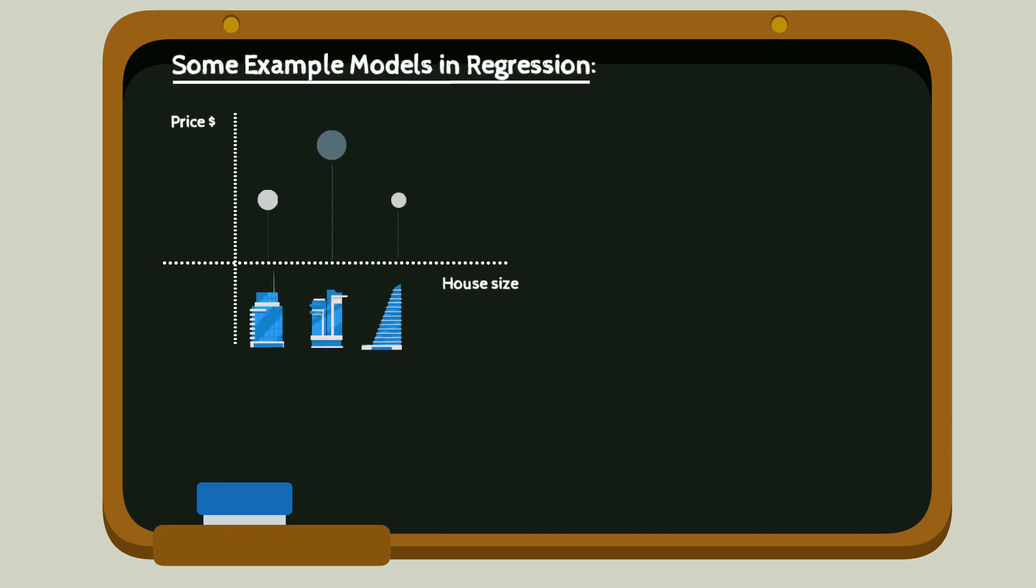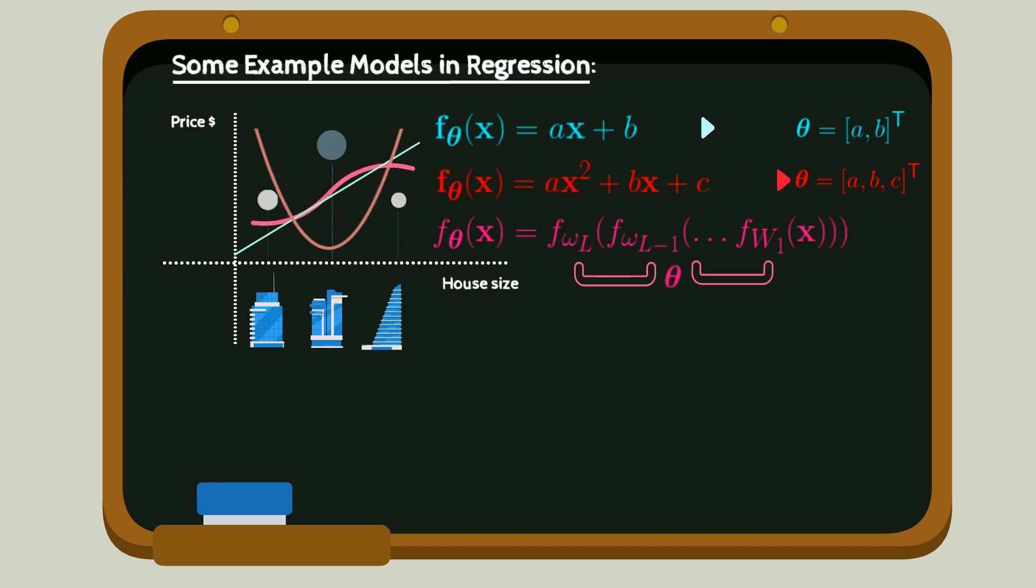Examples of f theta include polynomials, e.g. linear ax plus b with theta equals a and b, quadratic ax squared plus bx plus c with theta being a, b and c, or deep neural networks with theta being the layer weights. Deep neural networks, however, are a topic for another video.